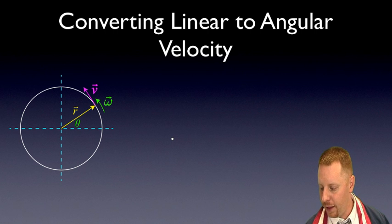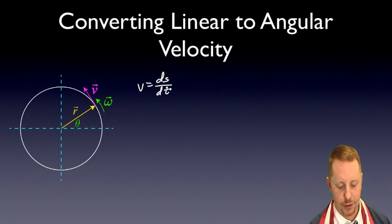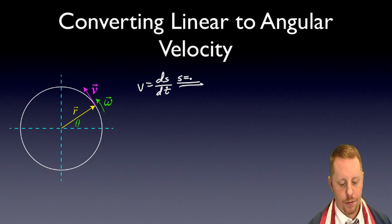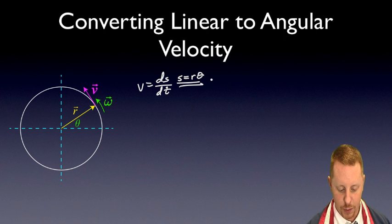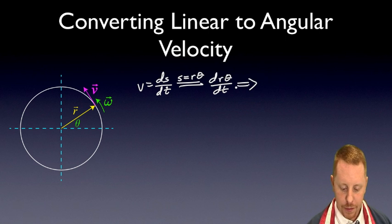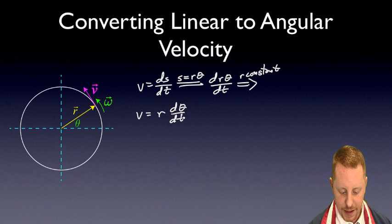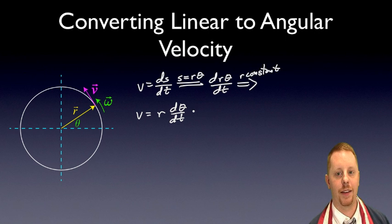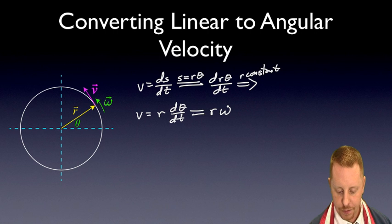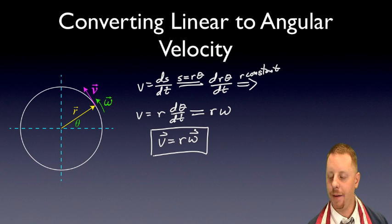We can convert linear to angular velocity mathematically. We know velocity is the rate of change of position with respect to time, and that translational displacement converts to angular displacement via S = Rθ. Replacing S with Rθ, velocity becomes d(Rθ)/dt. Since the radius R is constant for circular motion, we can pull it out of the derivative, giving V = R·(dθ/dt). Since dθ/dt is the angular velocity, we arrive at V = Rω — our equivalence relationship between linear and angular velocity.